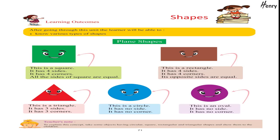Shapes. Learning outcomes: after going through this unit, the learner will be able to know various types of shapes. Plain shapes: this is a square — it has four sides and four corners; all the sides of a square are equal. This is a rectangle — it has four sides and four corners; its opposite sides are equal. This is a triangle — it has three sides and three corners. This is a circle — it has no side and no corner. This is an oval — it has no side and no corner.